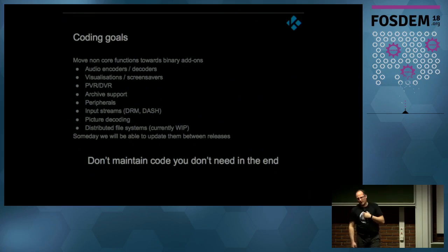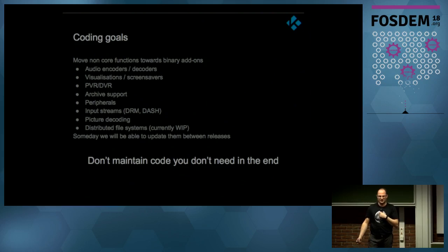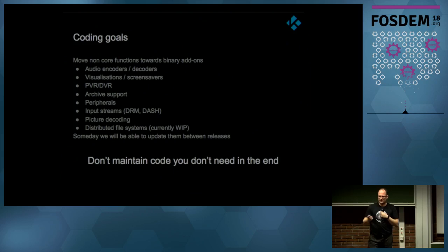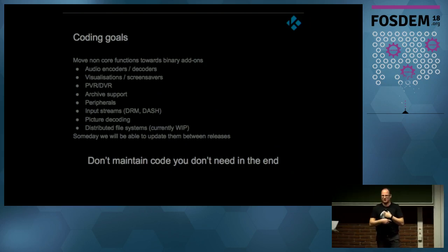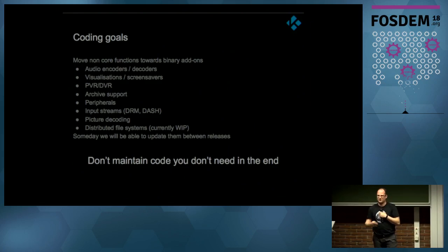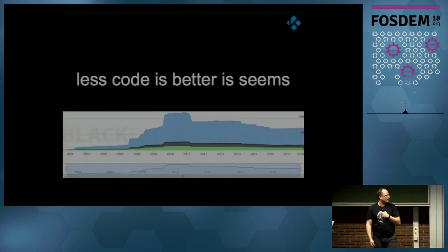We're moving a lot from core to binary add-ons, because the goal is to distribute them through our repository. You run version 18 and you get a new Samba library, new visualizations, and picture decoding. When a raw library updates for new picture formats, you don't have to install a new version of Kodi — you just get the update. Less code is better, as you can see: since 2016 the code flattens out.